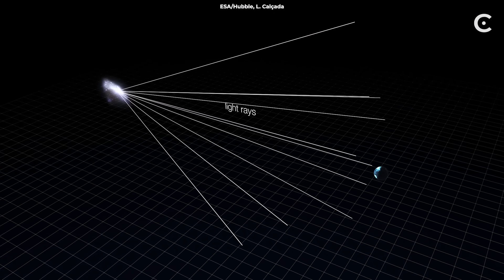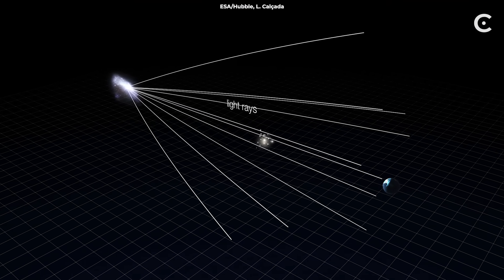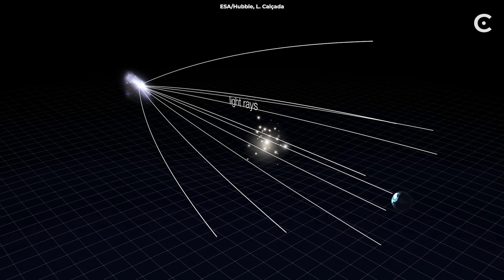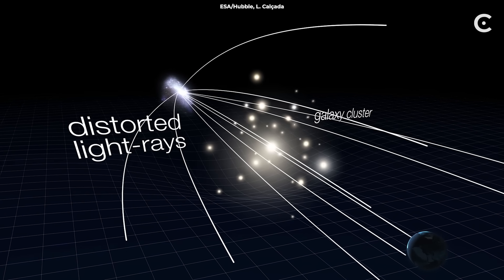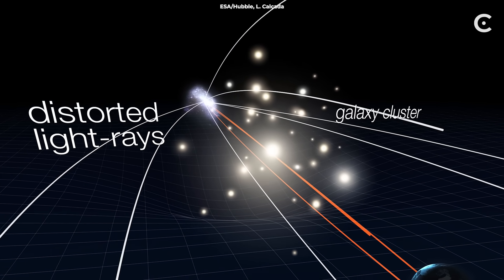Here's where it gets fascinating. Mass and energy tell space-time how to curve, and curved space-time tells matter how to move. It's like a cosmic dance, where the dancers and the dance floor are constantly influencing each other.